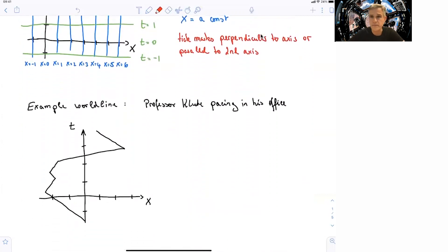An example of a world line is simply drawing all events which correspond to me. Professor Kluter is pacing in his office. Maybe on a line, just the x-coordinate is plotted here. Time passes, and I'm just pacing along, changing direction. Each time, each little segment is constant velocity. That's the world line of me from some time t for minus t to time equal 4t.